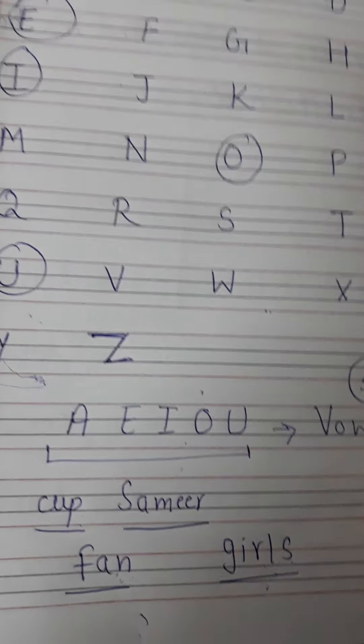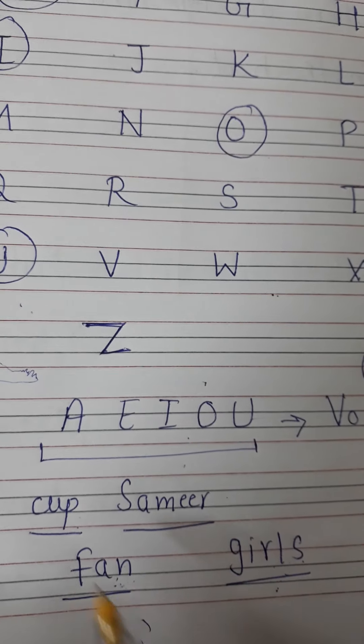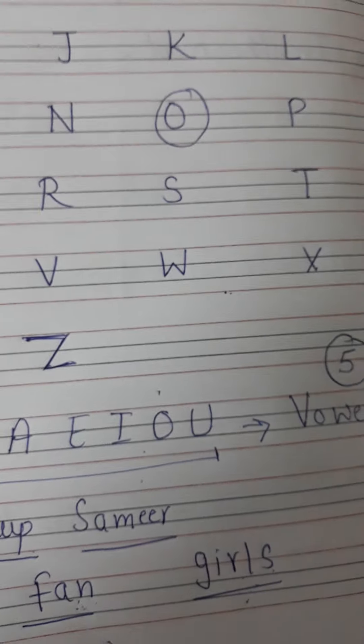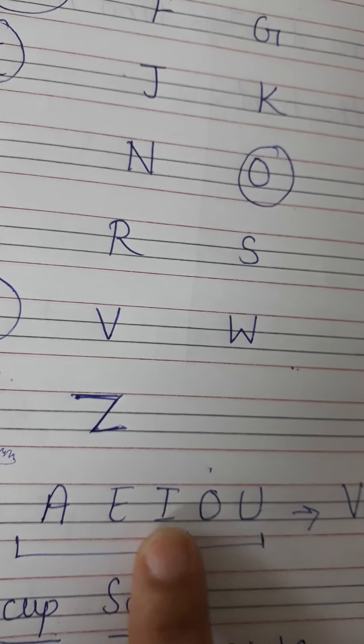So now you know about vowels, consonants, singular noun. Now we will connect all these things to learn a new topic which is called articles. Which is called articles. A-R-T-I-C-L-E-S. You need to know how to spell it and how to read it. A-R-T-I-C-L-E-S. Articles. Right.